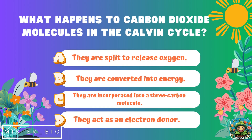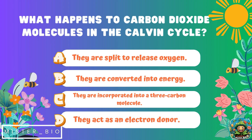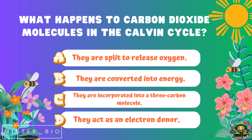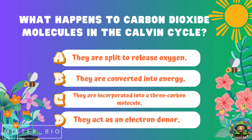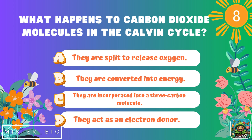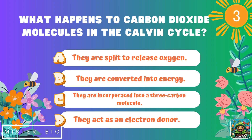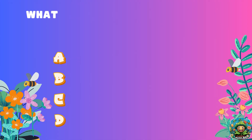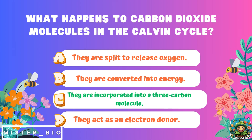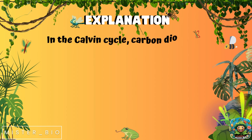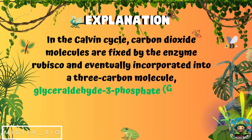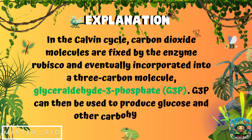What happens to carbon dioxide molecules in the Calvin cycle? A) they are split to release oxygen, B) they are converted into energy, C) they are incorporated into a three-carbon molecule, or D) they act as an electron donor. The correct answer is C, they are incorporated into a three-carbon molecule. In the Calvin cycle, carbon dioxide molecules are fixed by the enzyme RuBisCO and incorporated into a three-carbon molecule called glyceraldehyde-3-phosphate (G3P).